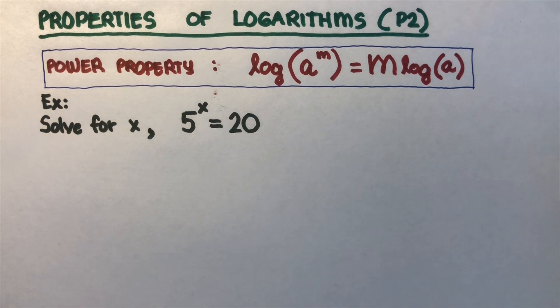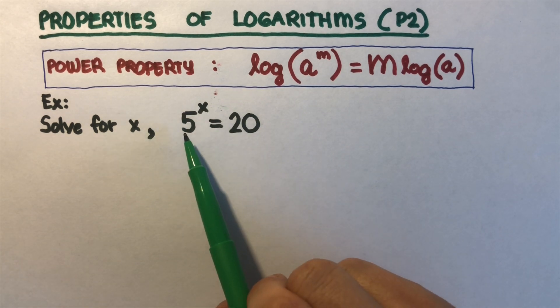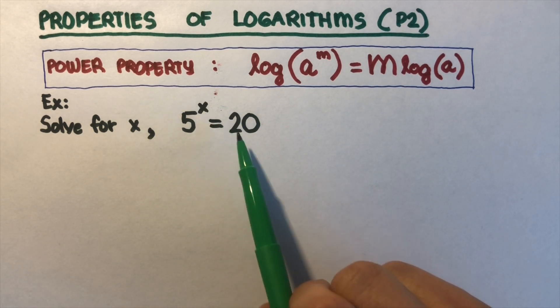Now let's take this example right here. We are supposed to solve for x. 5 to the power x equals 20. Now if we look at this, 5 to the power 1 is 5, and 5 to the power 2 is 25.